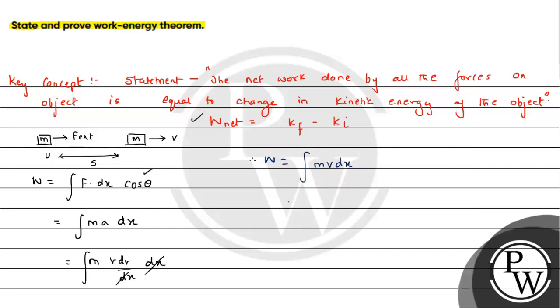Now, we have to integrate it. Mass constant. So it will be integration of Vdv and integration will be from U to V. Initially, it was having U velocity. Finally, it will be having V velocity. So integration will be V2 by 2. Limit will be V. So it will be V2 by 2 minus U2 by 2. If we multiply it with M, we will have work done will be equal to half M V2 minus half M U2.